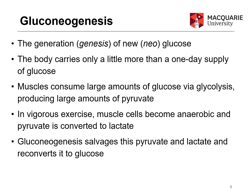Muscles consume large amounts of glucose via glycolysis and in doing that they produce large amounts of pyruvate. Under vigorous exercise the muscle cells convert that pyruvate into lactate. Gluconeogenesis is a pathway that salvages the pyruvate back from the lactate as well as using other precursors — the glycerol component of fats and some of the carbon skeletons from the breakdown of amino acids.